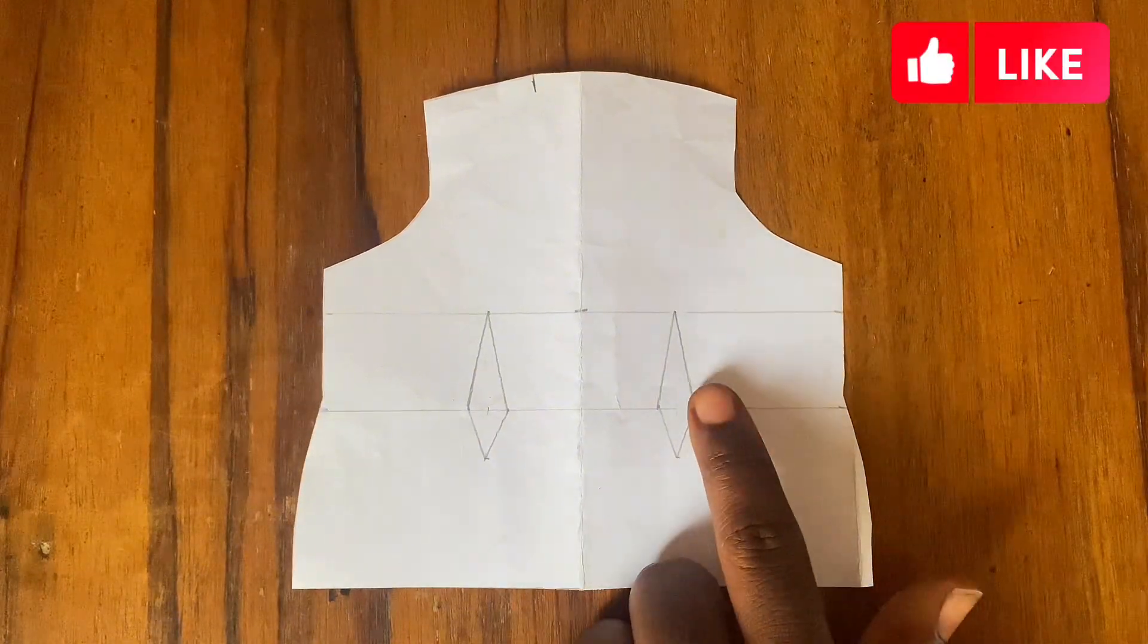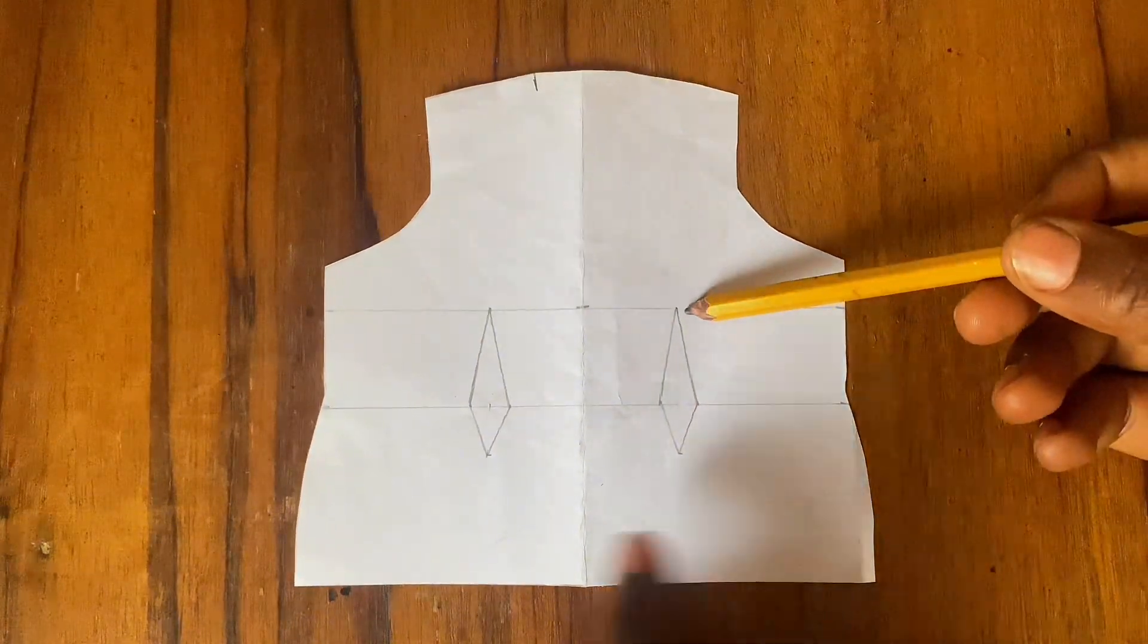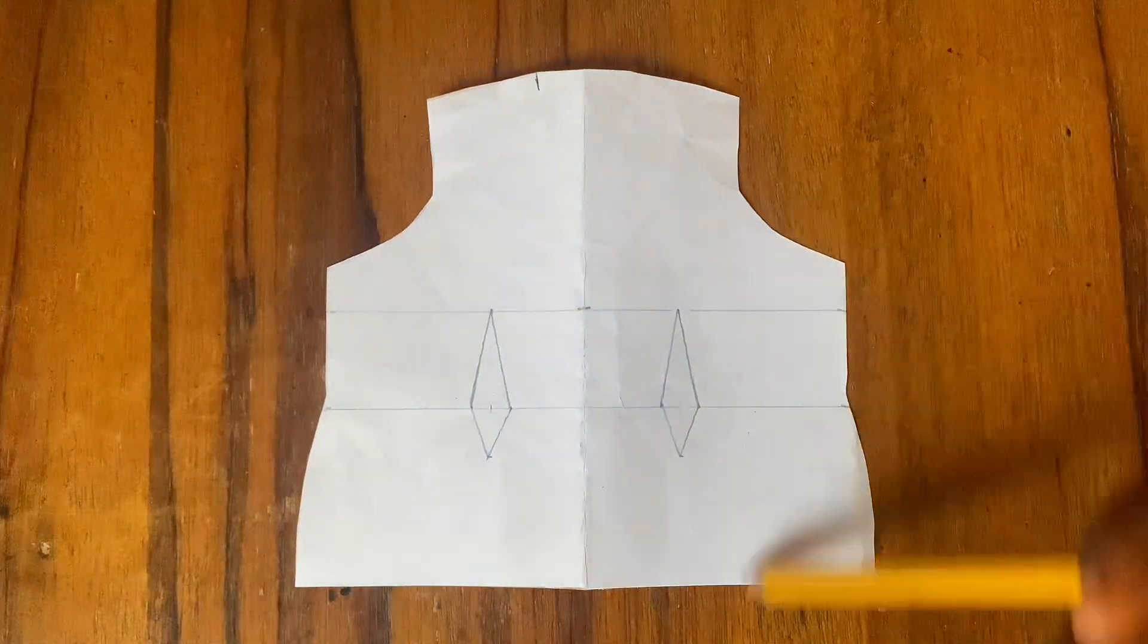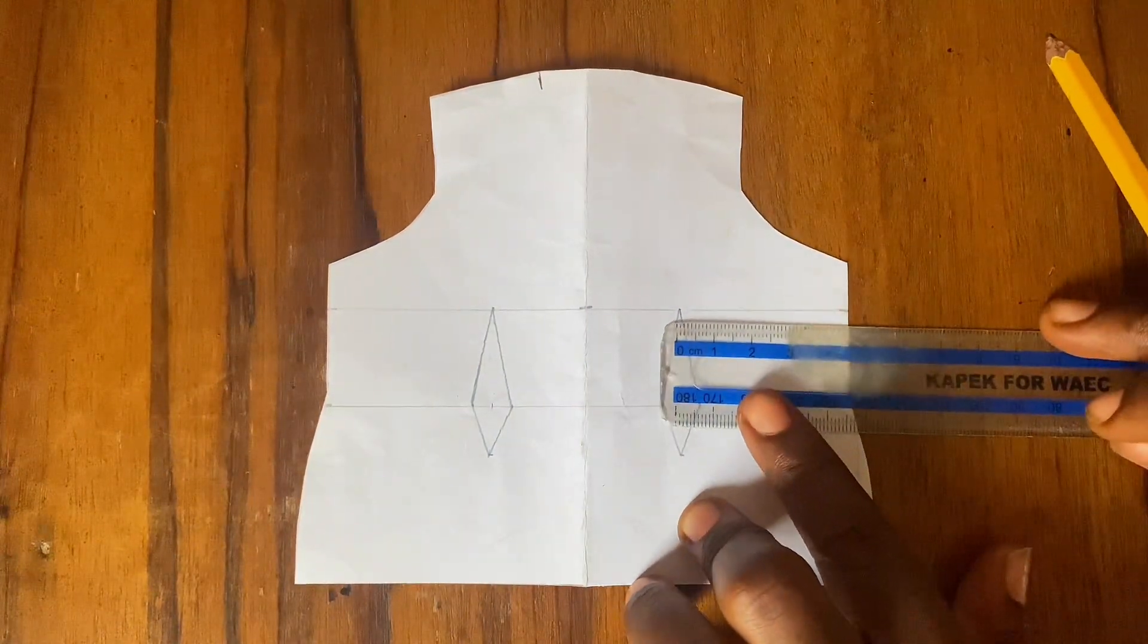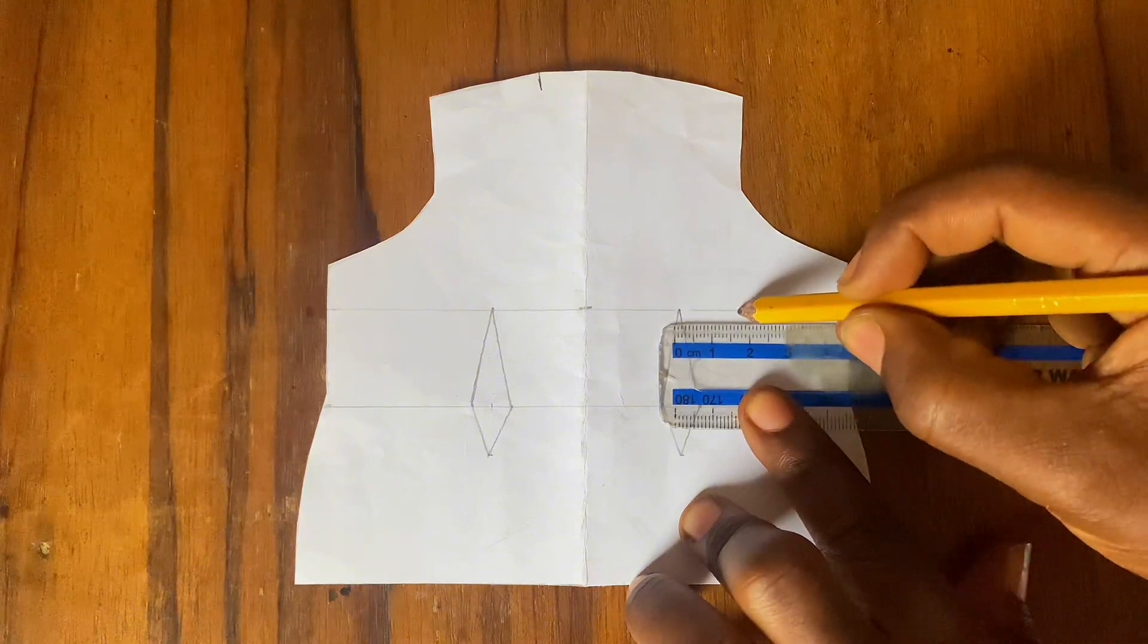Now, from this part of our pattern, we're just going to measure five inches away from this stat and go ahead and mark it like this.